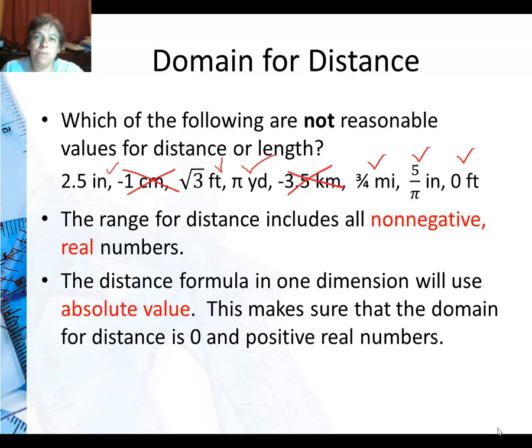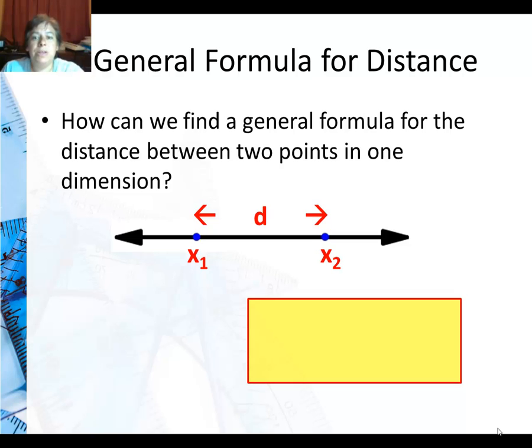So the distance formula in one dimension is going to use something called absolute value which you should have seen in middle school. This makes sure that the domain for distance is zero and positive real numbers. So revisiting our formula, remember how we could subtract to get distance and I'll go ahead and do that. I add on this little extra bit here which is the absolute value sign to guarantee that I get a positive distance.